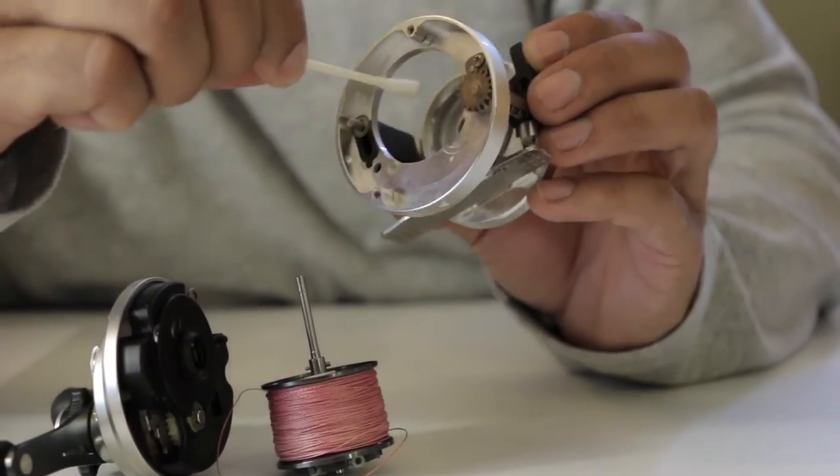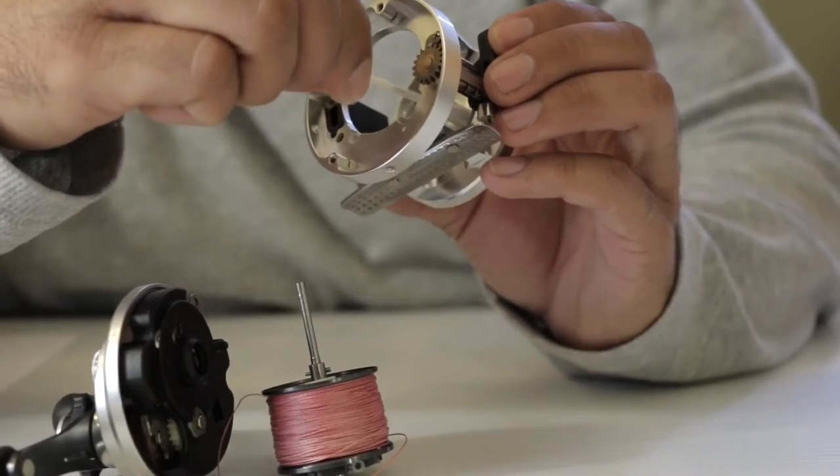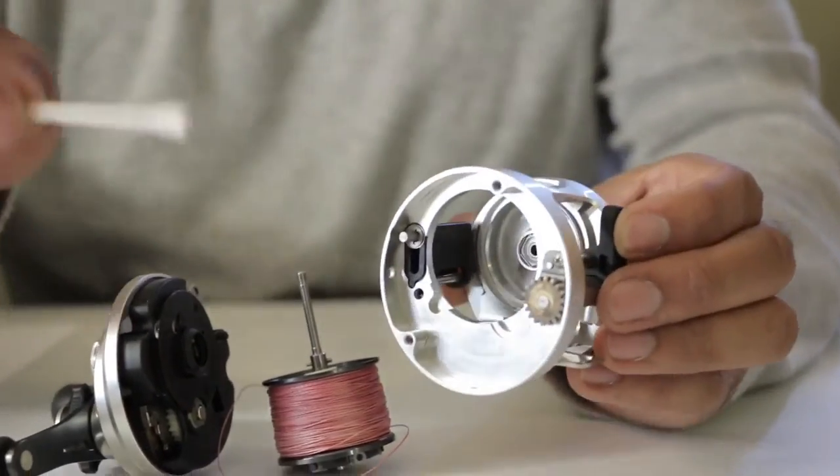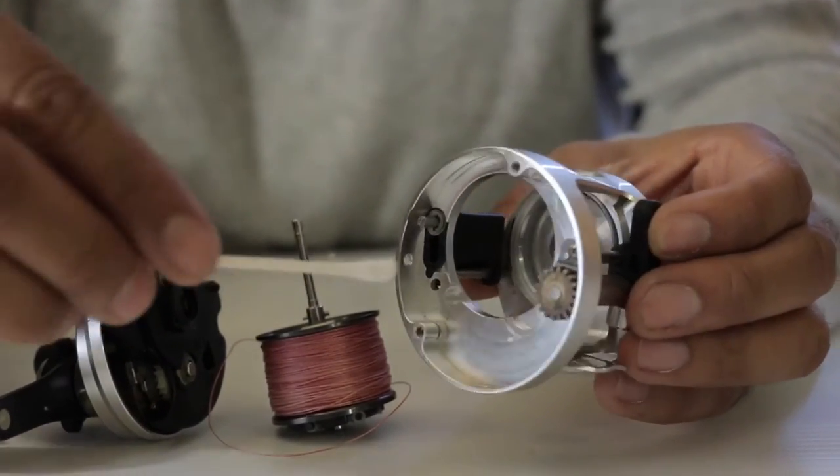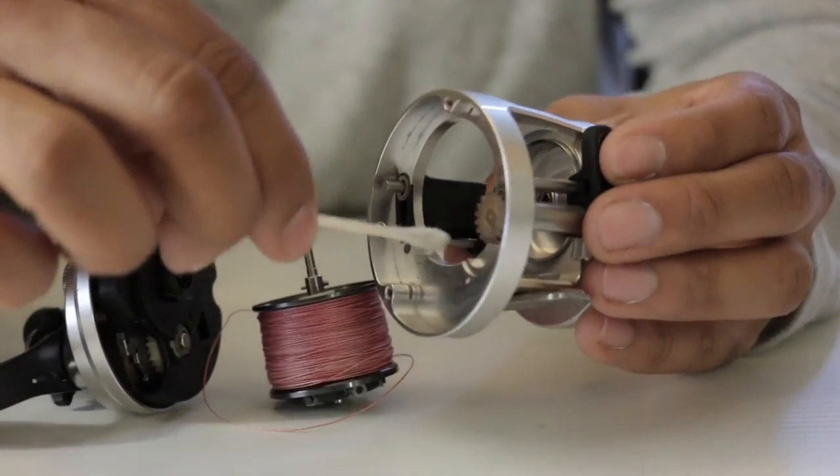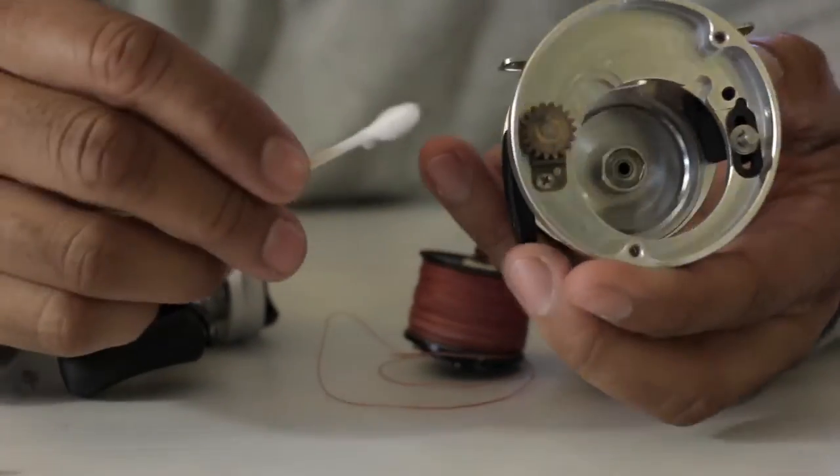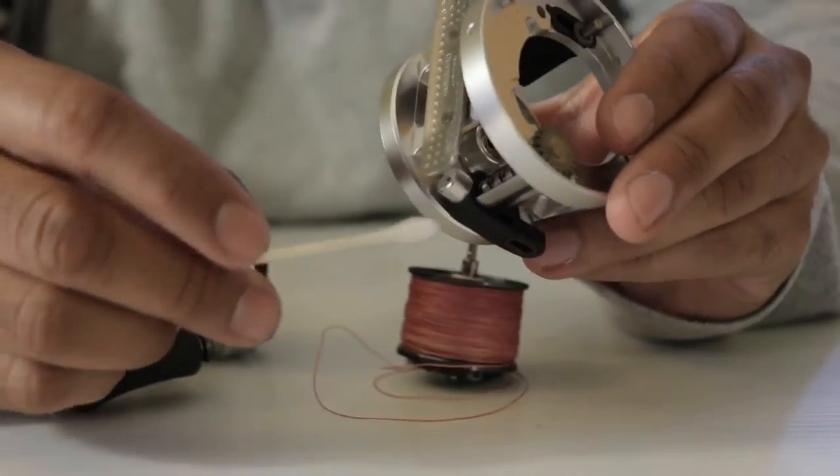Sometimes if it's really dirty, you might want to put alcohol on the top of this, just rubbing alcohol to make it, to get the grime off. I'll take a Q-tip and I'll also clean the level wind system here.